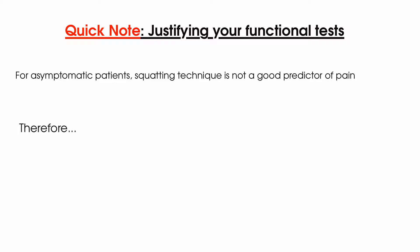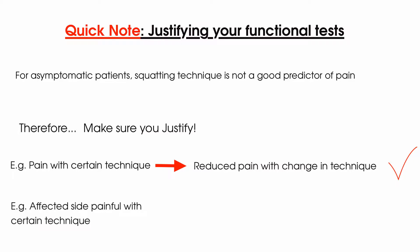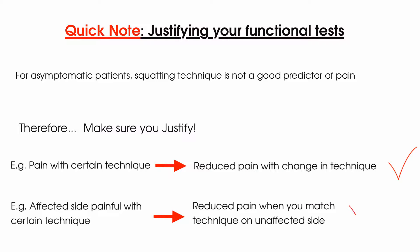Therefore, what we would like to suggest is that you take some of the ideas we give you in this video and then really justify them when it comes to your patient. For example, if they squat with their knees out and it's painful, and then you reduce this and it's not painful, then you have justified it. If they single leg dip in one way on the affected side, and then you correct it so that it matches the unaffected side and their pain reduces, then you have justified it. This helps us take our clinical reasoning to a new level by taking recent evidence into account and thinking critically about each individual patient.